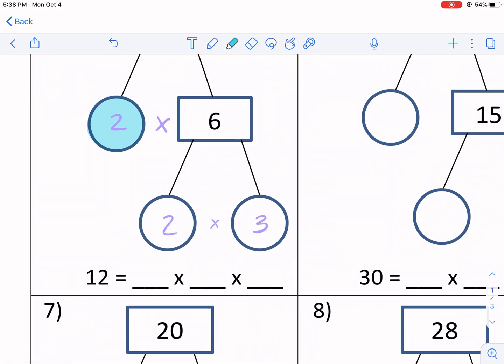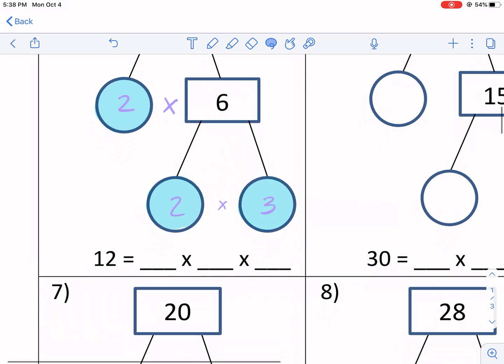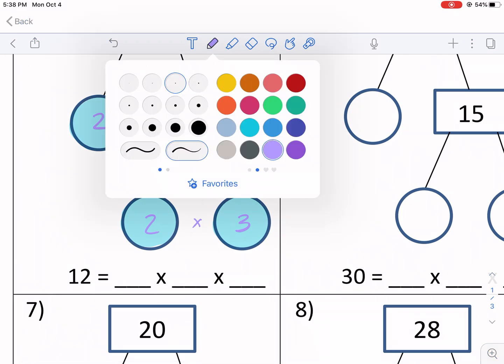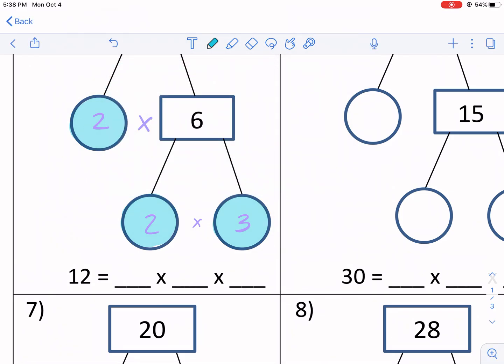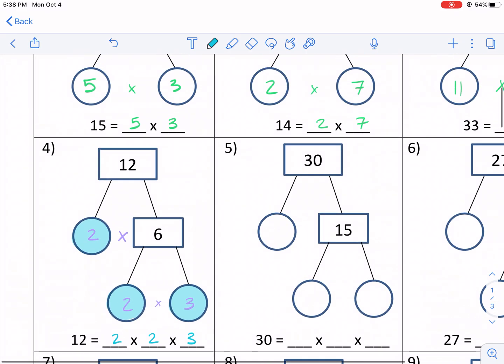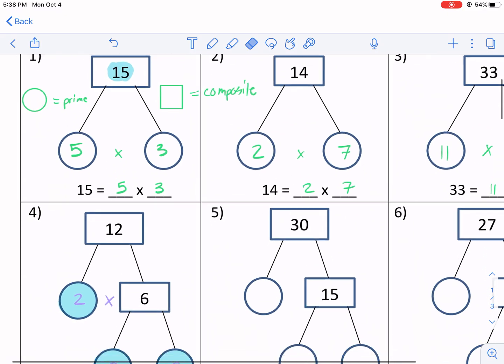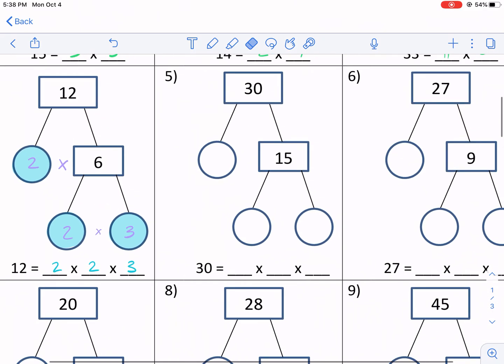Again, both of those numbers are prime numbers. So we have two times six, and then two times three makes that six. Now, what we're doing here for this bottom part is we're just writing only the primes. So we're going to write two times two times three. Those are only the prime numbers. And that's what makes it a prime factorization, because we're trying to get only the prime factors at the very end.